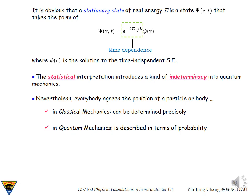Nevertheless, everybody agrees the position of a particle or a body can be determined precisely in classical mechanics, but it has to be described in terms of the probability in quantum mechanics.